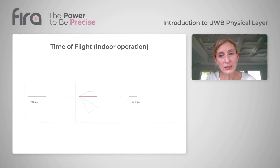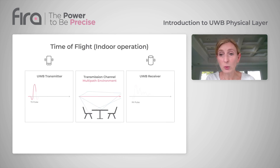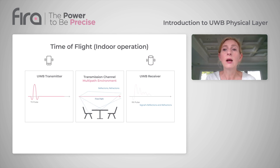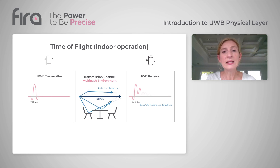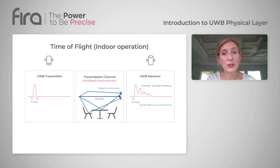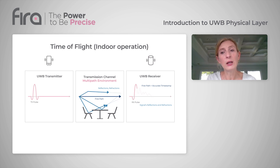In indoor operation, the signal can take multiple paths. The direct line of sight is the shortest path, but signal reflections come from the environment, like walls, ceilings, and furniture. These reflections captured at the receiver may overlap with the first path. But thanks to UWB's short pulse duration, it remains possible to distinguish the direct shortest path and hence have accurate time measurement.